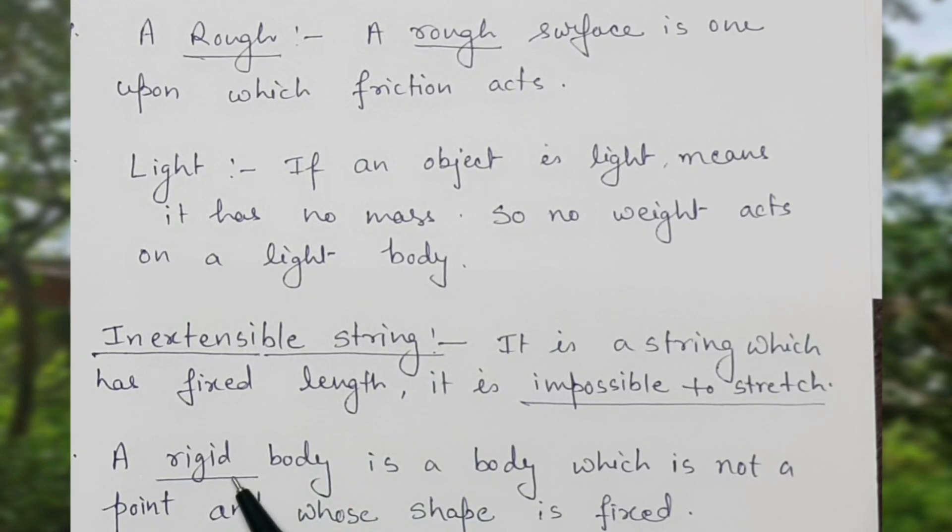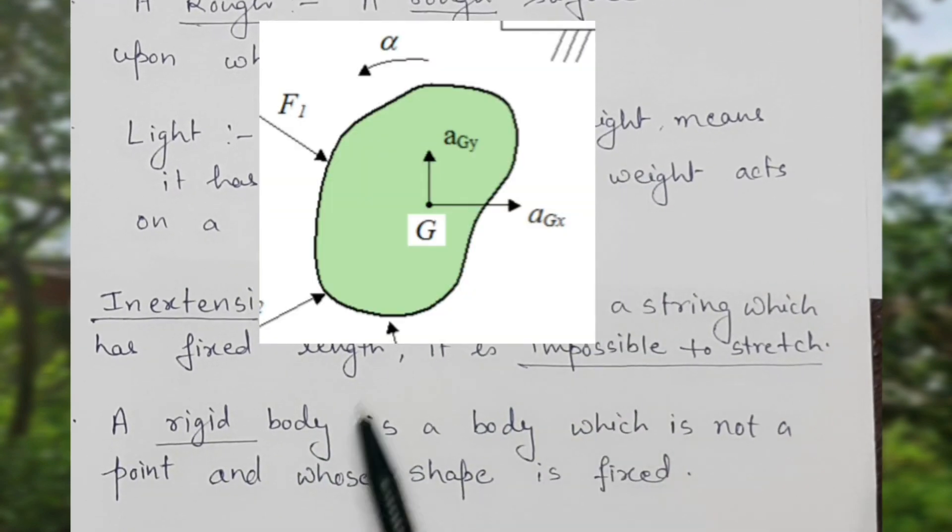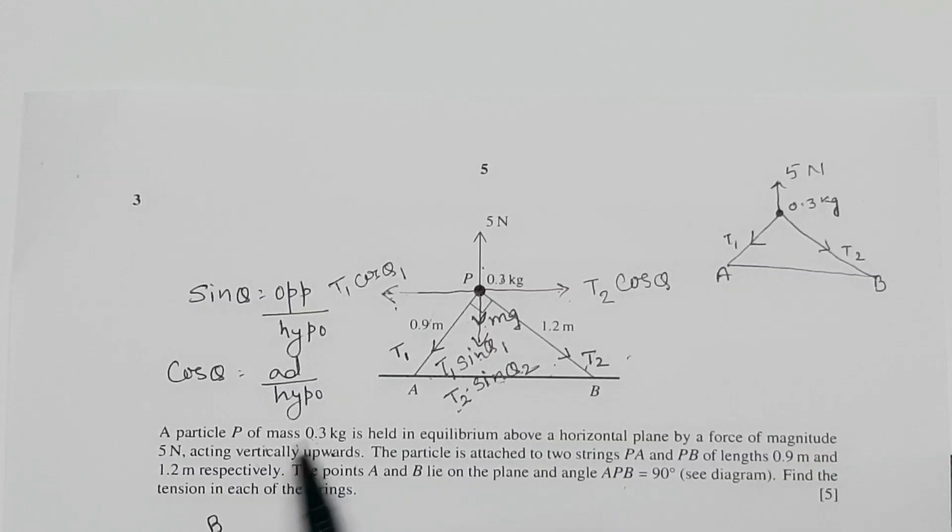The next one is rigid body. It is a body which is not a point and whose shape is fixed. Now move on to the question.